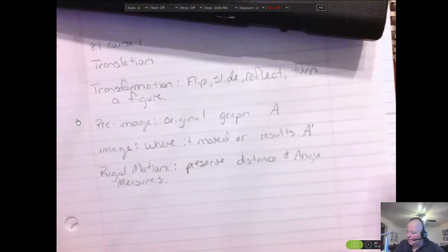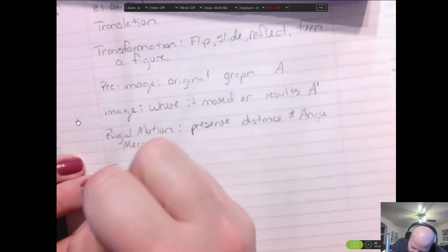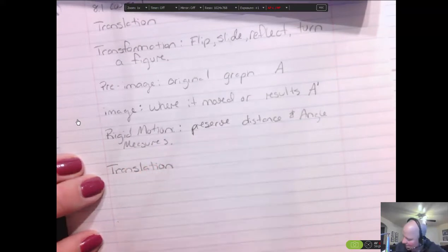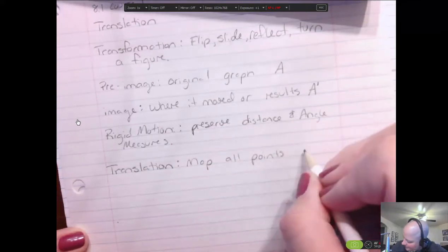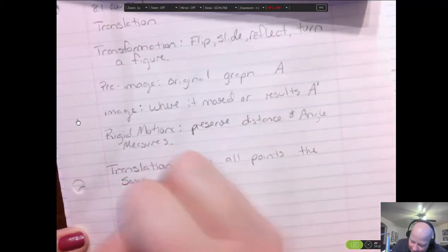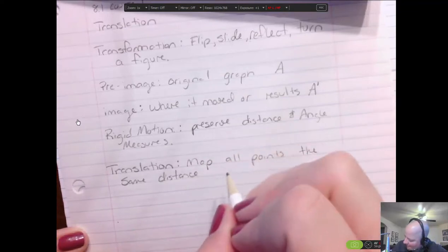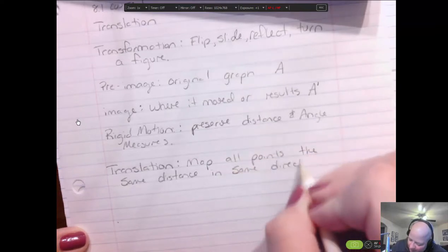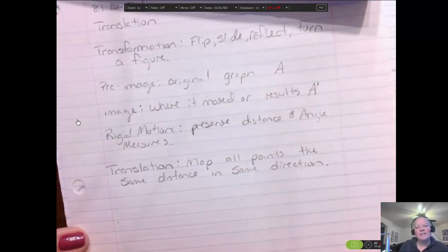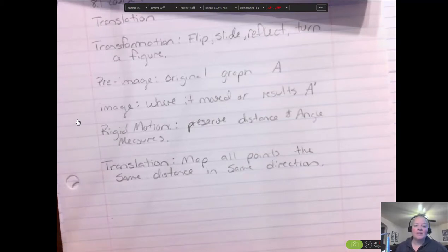And then this section 8-1 is on one of our transformations. This transformation is a translation. And what we do with this one is we map all points the same distance in the same direction. And if you're not taking notes with me, you're probably not going to remember any of these definitions and you won't have any way to look them up quickly. So you really should have a math notebook because this is the first section in semester B. You really should have a math notebook where you take notes from my videos or from the virtual nerd videos and you have those to use when you do the homework.